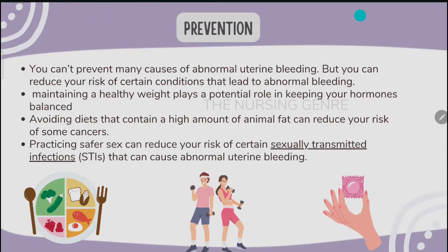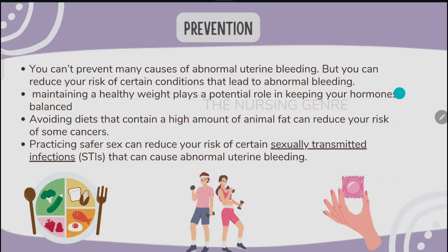Prevention: you cannot prevent many causes of abnormal uterine bleeding, but you can reduce the risk of certain conditions. Maintaining a healthy weight plays a role in keeping your hormones balanced. Avoiding diets high in animal fat can reduce your risk of some cancers. Practicing safe sex can reduce your risk of certain sexually transmitted infections that can cause abnormal uterine bleeding.